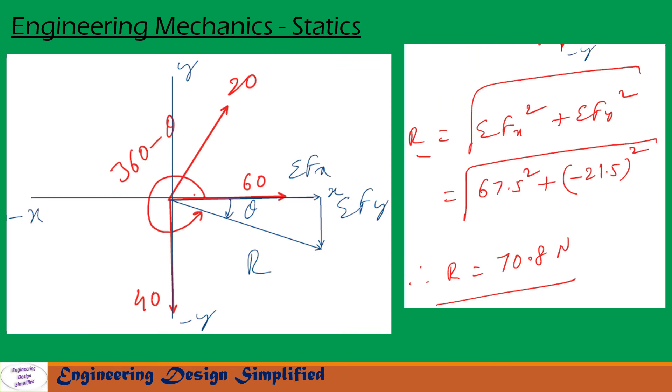So the resultant R can be found as square root of sigma Fx square plus sigma Fy square. So after substituting the values and simplification, we get R equal to 70.8 Newton.